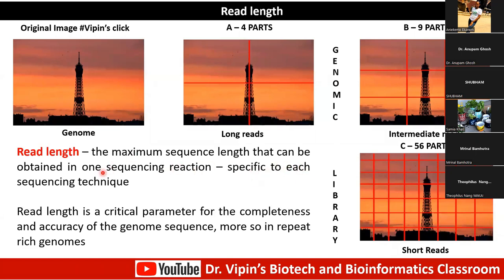Read length is the maximum sequence length obtainable in one sequencing reaction, and is specific to each technique. If you're using Illumina, you get around 150 bases. Ion Torrent gives around 100 bases. Nanopore gives on average 10 kb. PacBio SMRT sequencing gives 10 kb to 30 kb very easily. Therefore, assembly becomes a lot easier with longer reads. Read length is a critical parameter for completeness and accuracy of genome sequences, especially in genomes with more than 50% repeat content like the human genome.